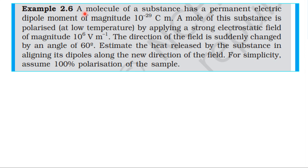Example 2.6: A molecule of a substance has a permanent electric dipole moment of magnitude 10 power minus 29 coulomb meter. A mole of this substance is polarized by applying a strong electrostatic field of magnitude 10 power 6 volt per meter. The direction of the field is suddenly changed by an angle of 60 degrees. Estimate the heat released by the substance in aligning its dipoles along the new direction of the field. For simplicity, assume 100% polarization of the sample.